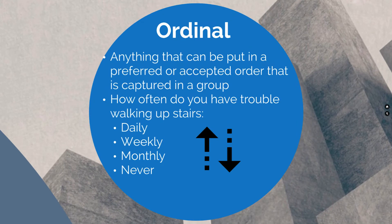For ordinal variables, anything that can be put into a preferred or accepted order is captured in groups. For example, the question 'How often do you have trouble walking up the stairs?' with responses of daily, weekly, monthly, or never — these have a hierarchy. Daily is more frequent than weekly, weekly more than monthly, and monthly more than never. Remember to always collect 'zero' or 'never' separately from the remainder of your categories if you need to split into a never-ever situation.